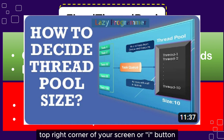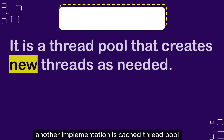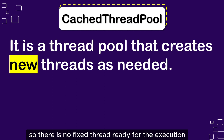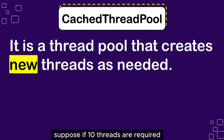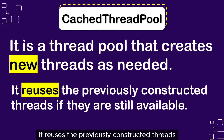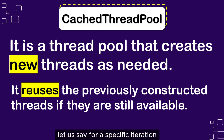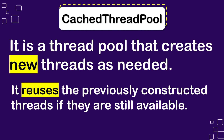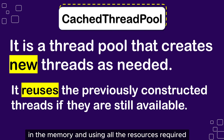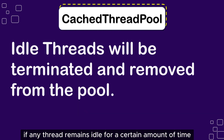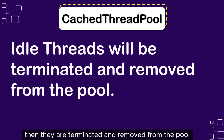Another implementation is Cached Thread Pool. It is a thread pool that creates new threads as and when needed. So there is no fixed number of threads ready for execution. If 10 threads are required, it will create 10 threads and perform the execution. In this type of thread pool, it reuses previously constructed threads if they are still available. You might wonder if that creates problems — say the pool created 1000 threads for 1000 tasks. Well, that's not completely true. If any thread remains idle for a certain amount of time, it is terminated and removed from the pool, which helps in reclaiming resources.